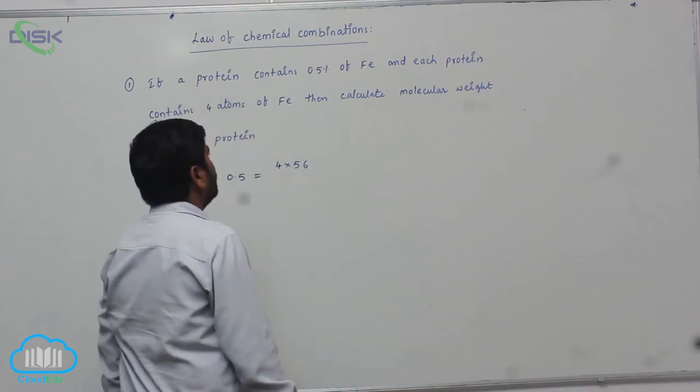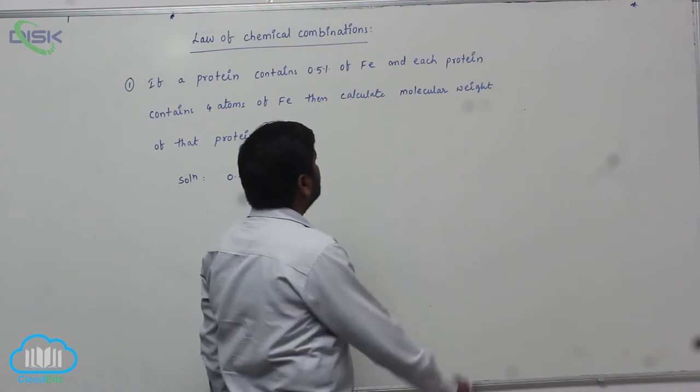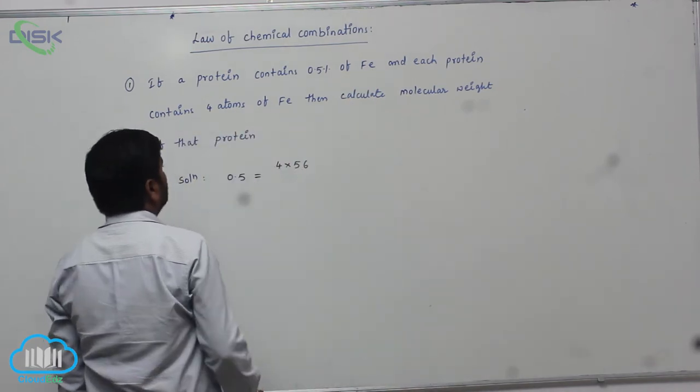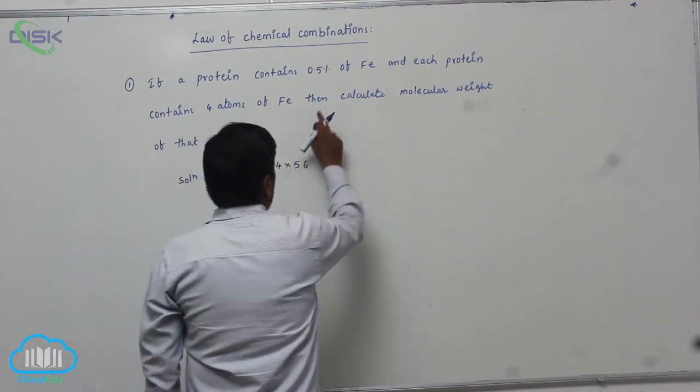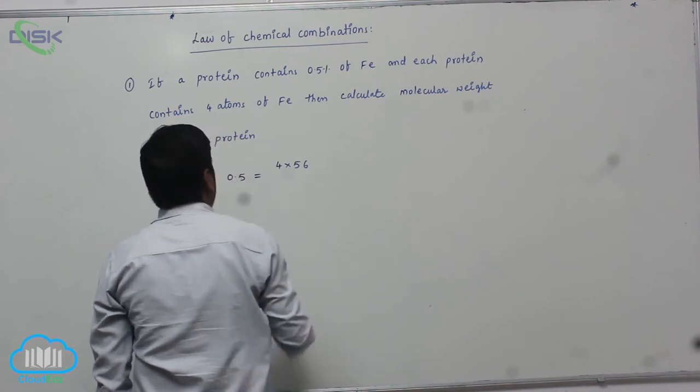If a protein contains 0.5% of iron, each protein contains 4 atoms of iron, then calculate molecular weight of that protein.